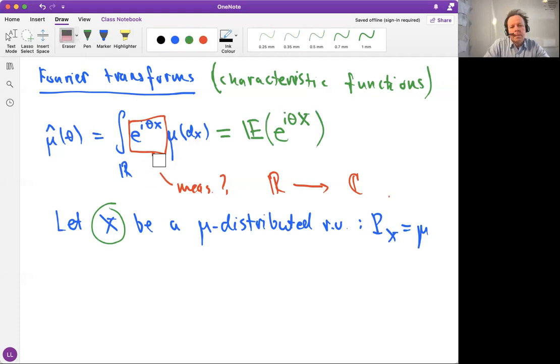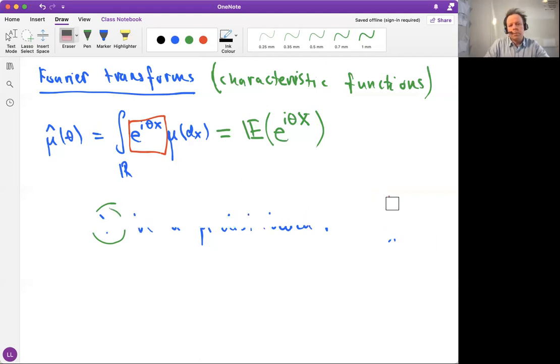Is this well defined? Let's study. We recall that X is a random variable with law equal to mu. Is this well defined? So think about this here being a random variable Z.